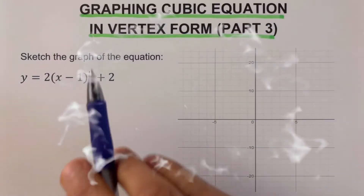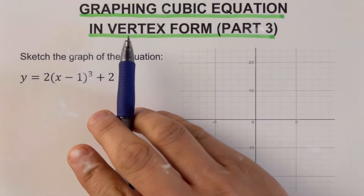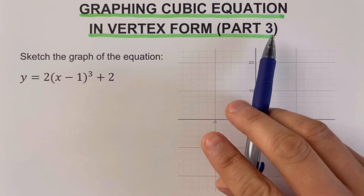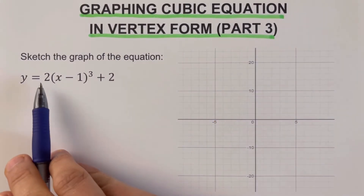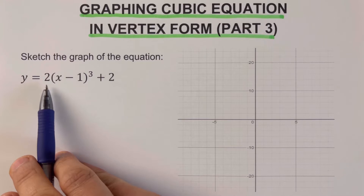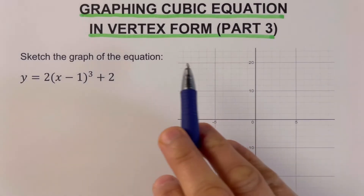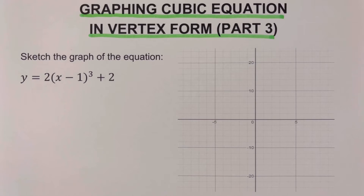Hello everyone. This video focuses on graphing cubic equations in vertex form, and this is the third part where the absolute value of a is greater than one. Please feel free to check out the description box below for links to other related topics on graphing cubic equations in vertex form. Before we jump into the example, let's review the basics of cubic equations in vertex form.